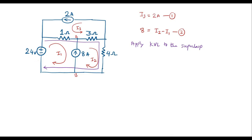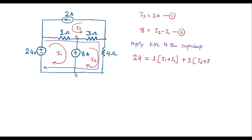So let me start from here. We can write: 24 is equal to the voltage across the 1 ohm resistor, that is 1 into — in the 1 ohm resistor two currents are flowing, I1 and I3, and they are flowing in the same direction — so it will be I1 plus I3. Plus, then current flows through the 3 ohm resistor, that is 3 into — here I2 and I3 are both flowing in the same direction — so it will be I2 plus I3.